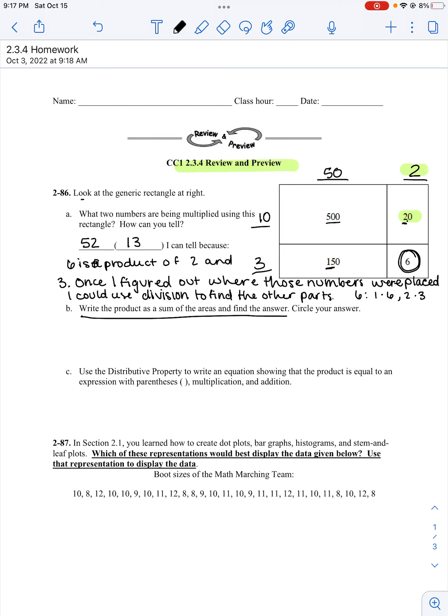Part B. Write the product as the sum of the areas and find the answer. Make sure to circle your answer. That's 500 plus 20 plus 150 plus 6. So I'm going to start with 500. 500 plus 150 is 650, plus 20 is 670, plus 6 is 676. Now I could put them vertically to figure that out. I'm still going to get the same answer. 6 plus 0 is 6, 5 plus 2 is 7, 5 plus 1 is 6.